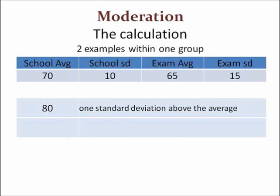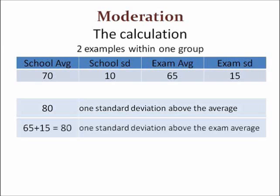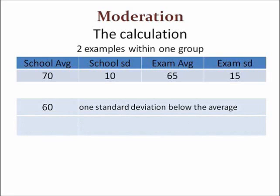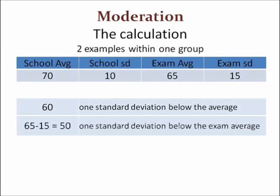This student has a mark of 80, which is one standard deviation above the average — 70 plus 10 is 80. If we take the exam average of 65 and add one standard deviation of 15, we get 80. In this case, the student's school mark wouldn't actually change. This student has a mark of 60, one standard deviation below the average. Taking the exam average of 65 and subtracting one standard deviation of 15, we get 50 — so this student's school mark would decrease.